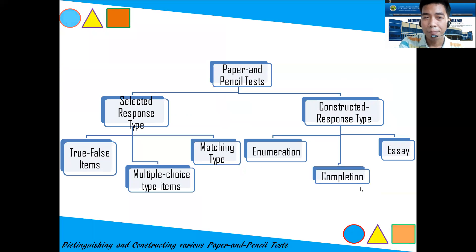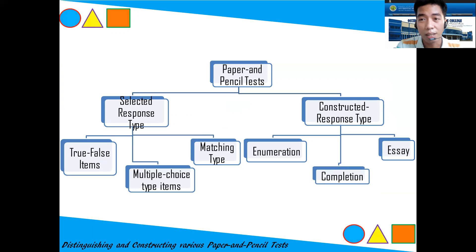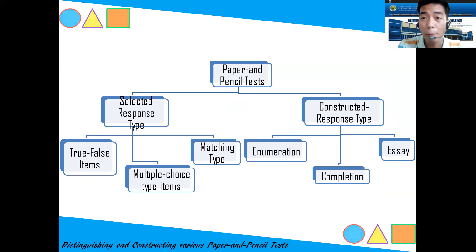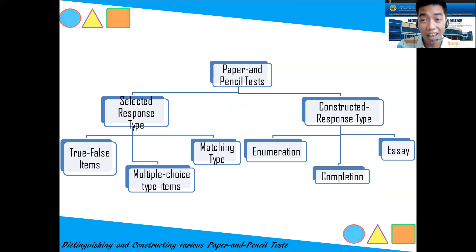Our paper and pencil tests can be categorized into two types. We have the selected response type — where there are given choices — and the constructed response type — where you yourself construct your own response.